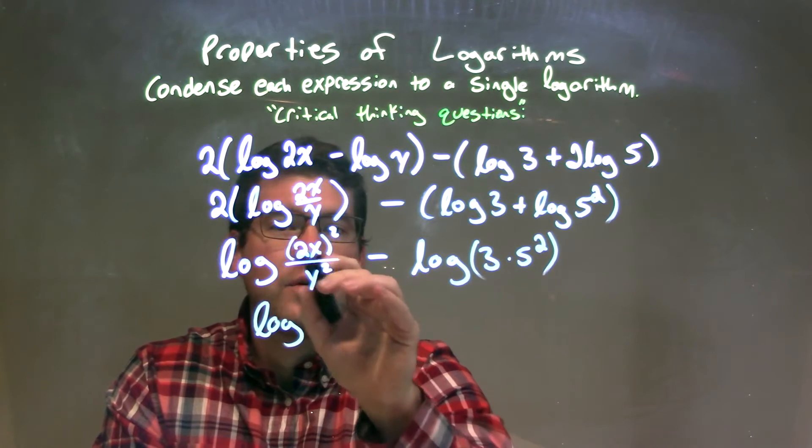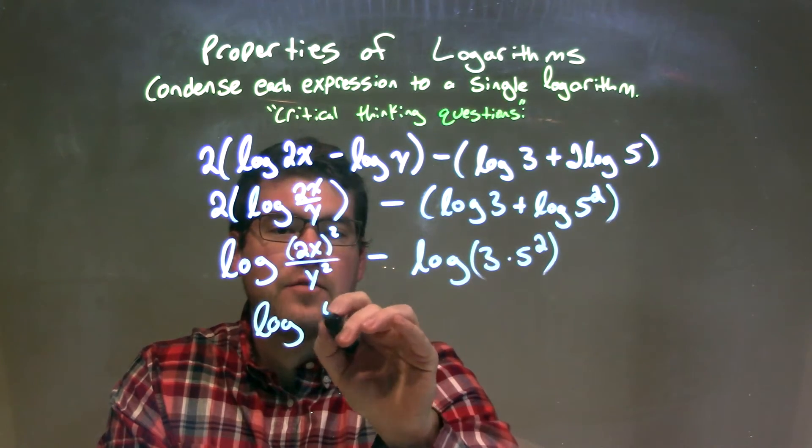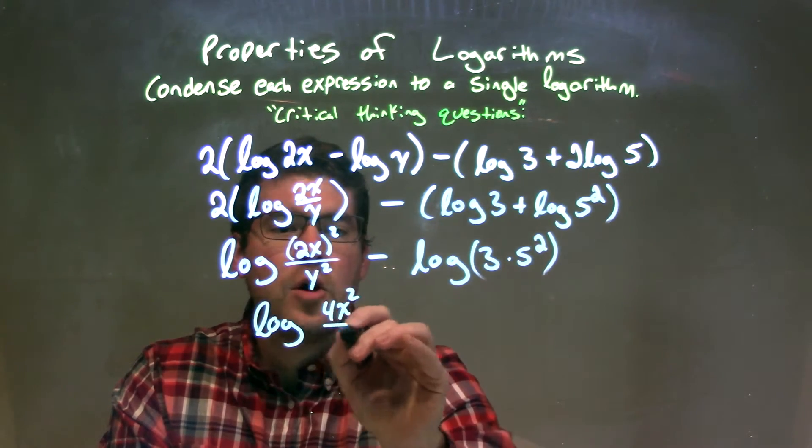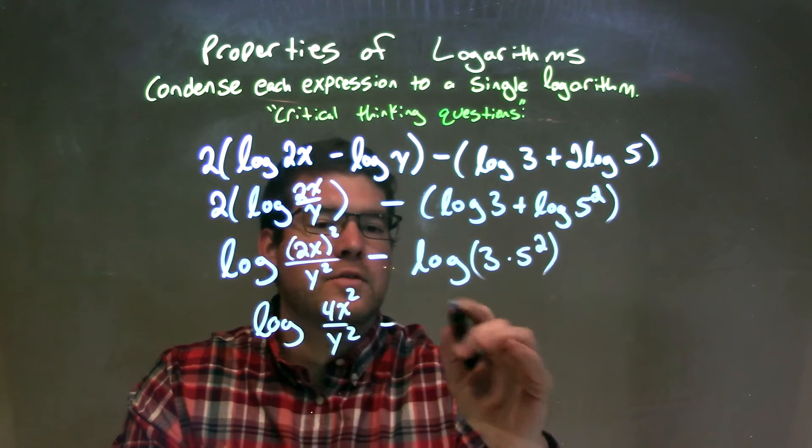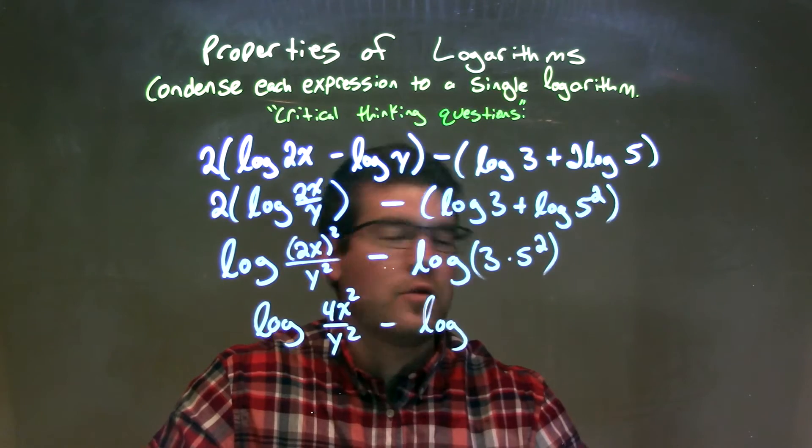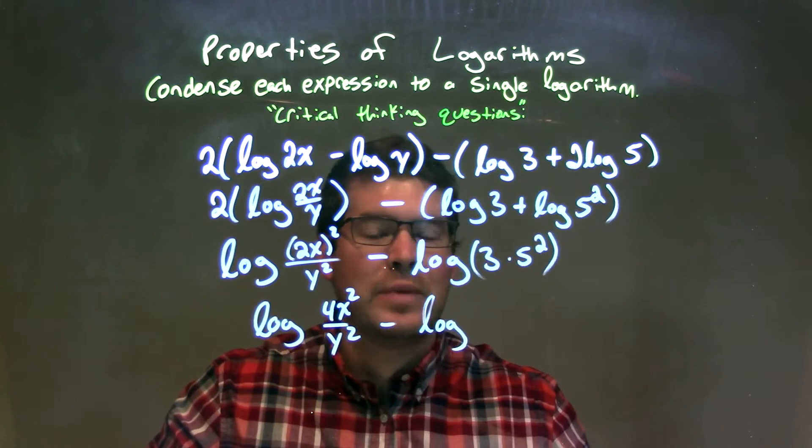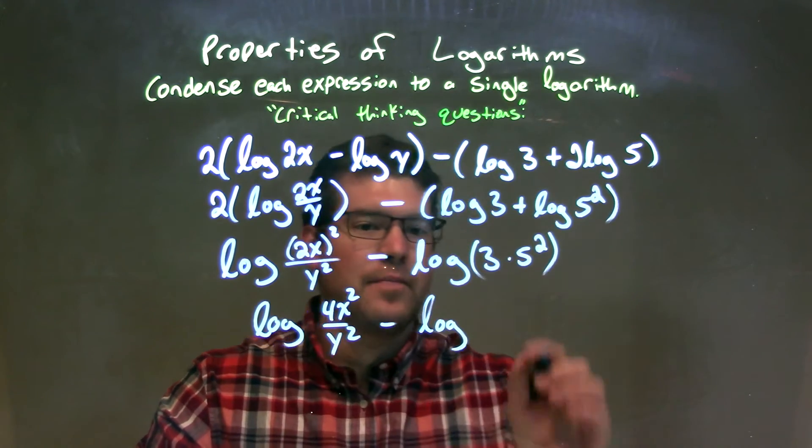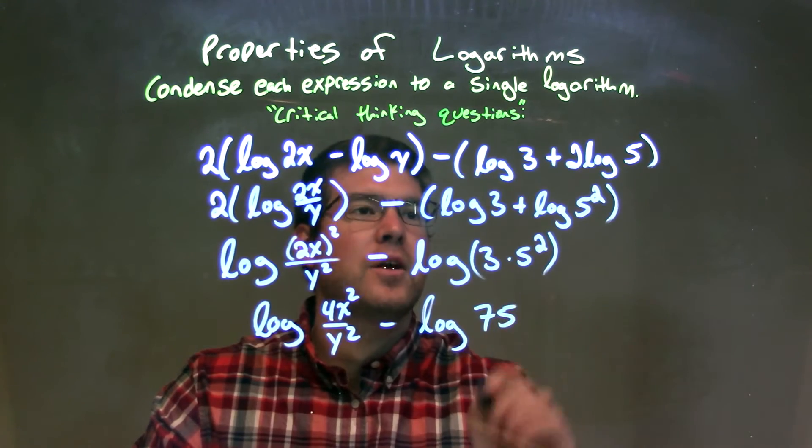So when I rewrite this, I have log here of, well, 2x squared, the same thing as 4x squared over y squared, minus the log of, well, 5 squared is 25 times 3 would be 75, so we have the log of 75 right here.